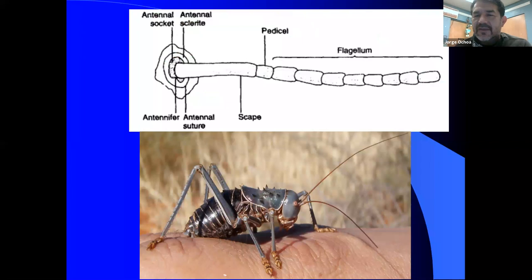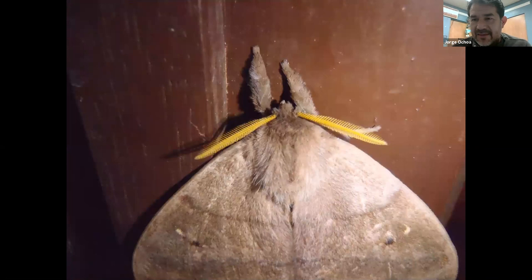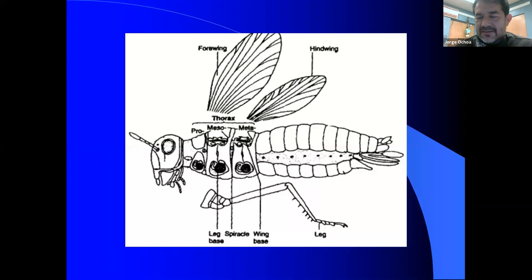Antennae are very important for detecting chemical signals. Insects communicate through pheromones — they release pheromones to find each other and read the environment around them. A moth, being nocturnal, will rely more on its antennae as receptors for pheromones than on its eyes, since in the dark they are essentially blind.